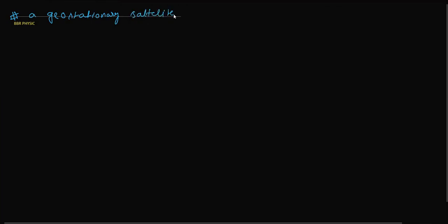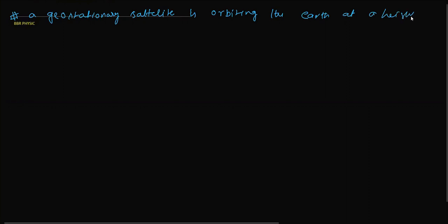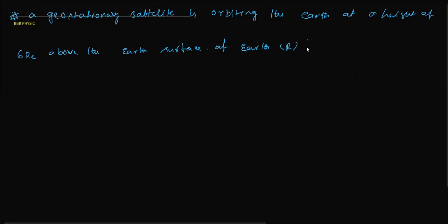Dear students, let me have a question based on geostationary satellites. A geostationary satellite is orbiting the Earth at a height of 6 Re above the Earth's surface, Re being the radius of the Earth.